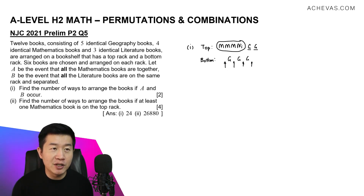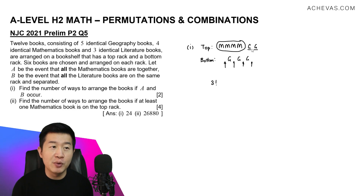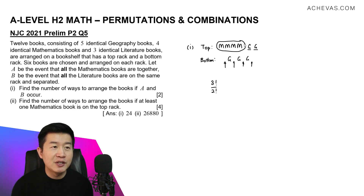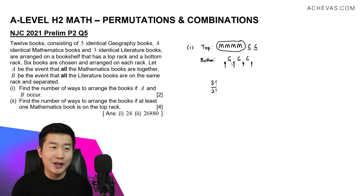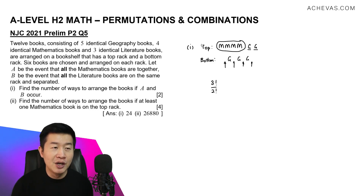Treating the top rack as objects, we have three objects total, so it's going to be 3 factorial. But the two geography books are identical, so we divide by 2 factorial. There's no point arranging the mathematics books since they're identical anyway. Moving to the bottom rack — there's also no point arranging the geography books since they're identical.